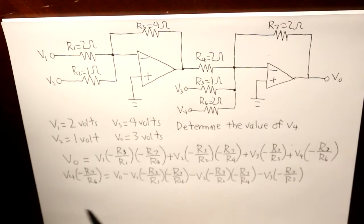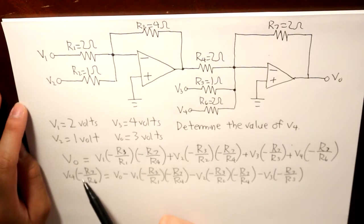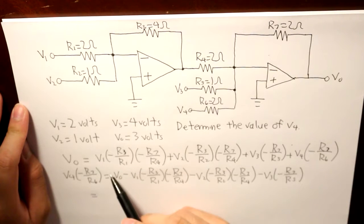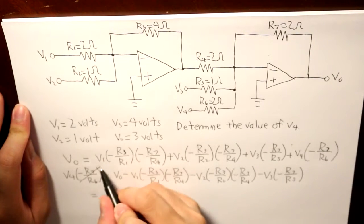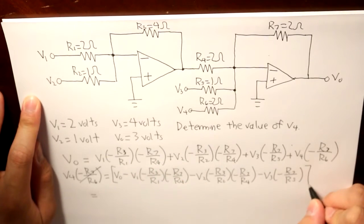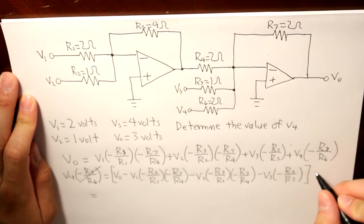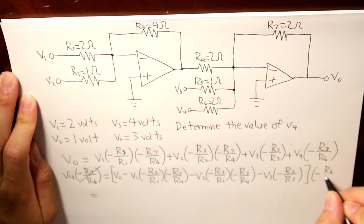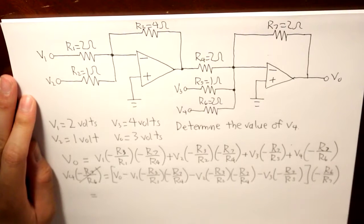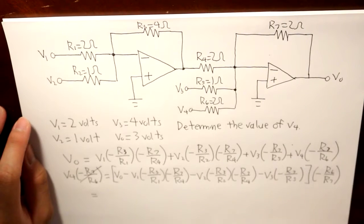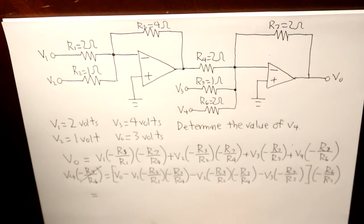So this is almost to the process where we're able to isolate V4, and then what we do is we take this over here, and what we get is R6 over R7 multiplied by this whole term. And then what we're going to do is we're going to sub in all the values to determine what our V4 is going to be.